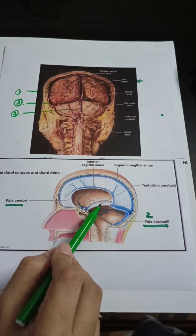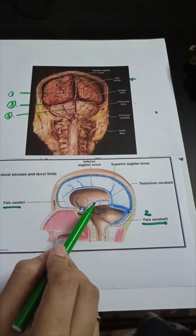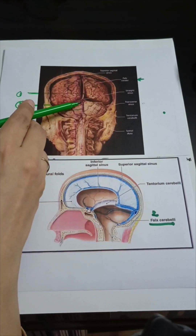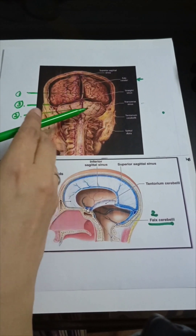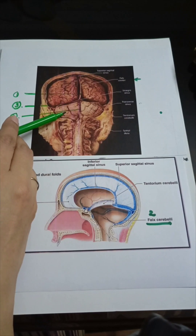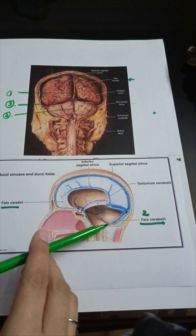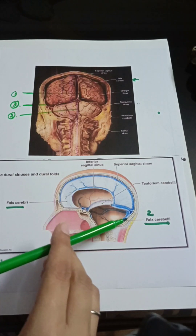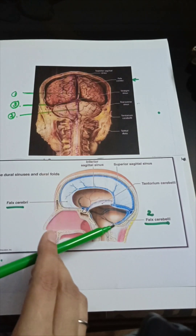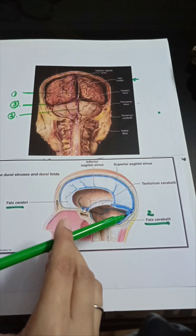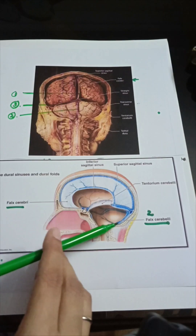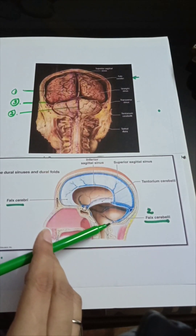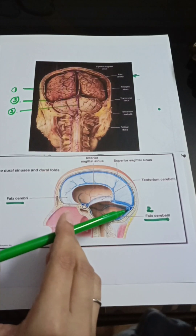The second fold of the dura mater is the falx cerebelli, present between the two cerebellar hemispheres. On the side view, this small fold of dura is attached to the occipital bone. The sinus in relation to the falx cerebelli is the occipital sinus, running from the foramen magnum all the way to the confluence of the sinuses.